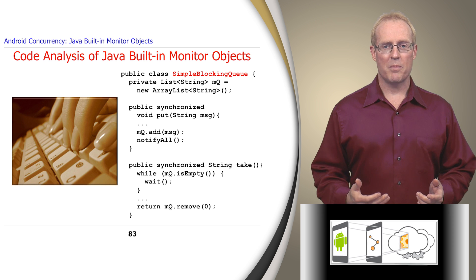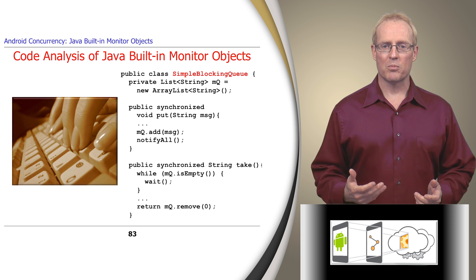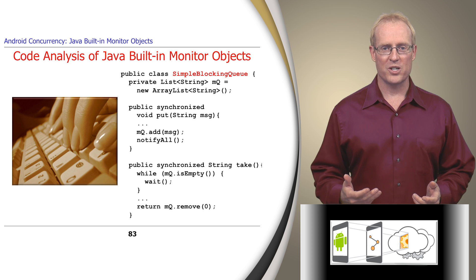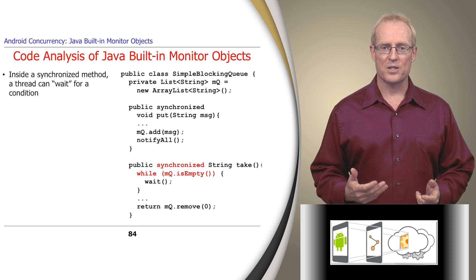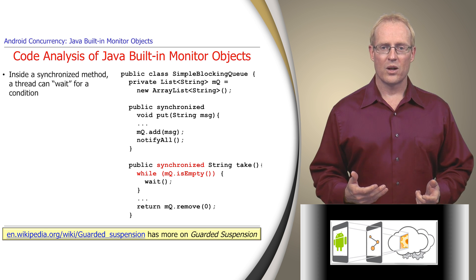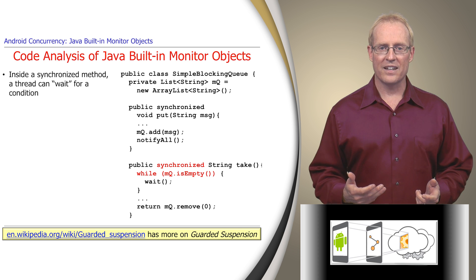Now that we've examined the behavior of a monitor object visually, we'll show some simple blocking queue Java code and discuss several implementation considerations. Within a synchronized method, a thread can wait for a condition to become true using the guarded suspension pattern, which requires both a lock to be acquired and a condition to be satisfied before an operation can be executed.